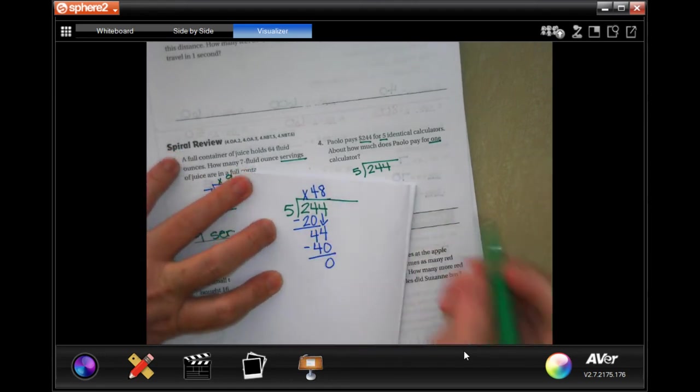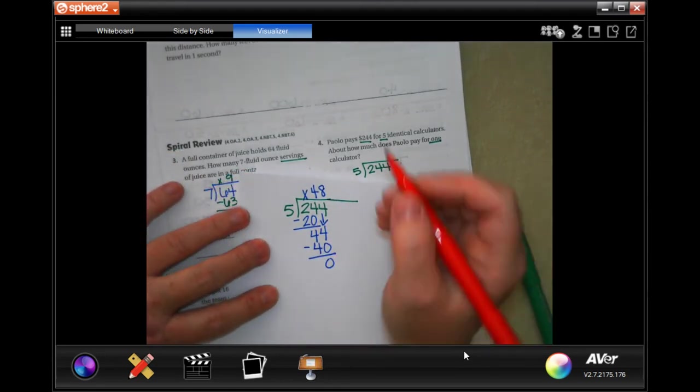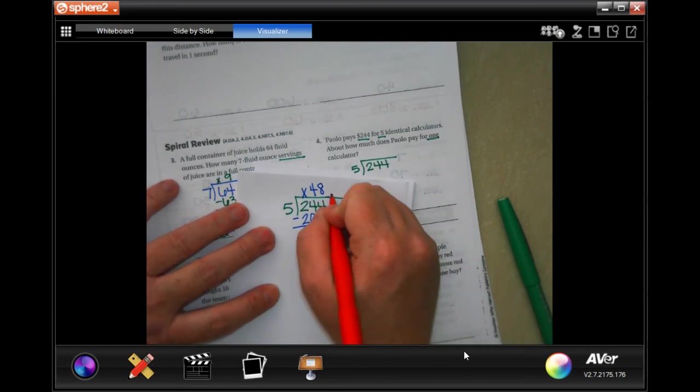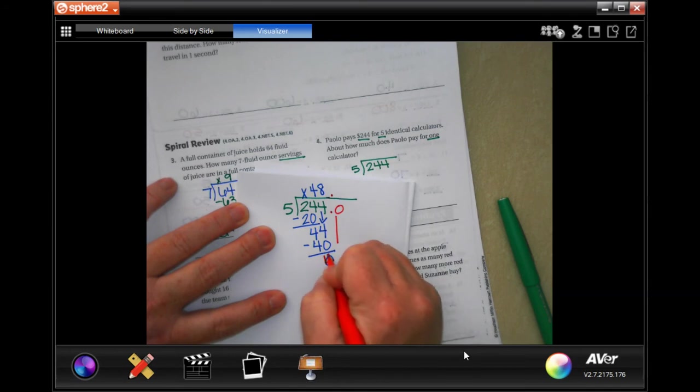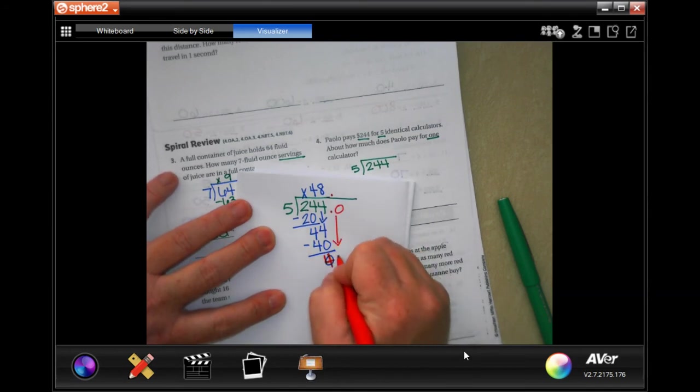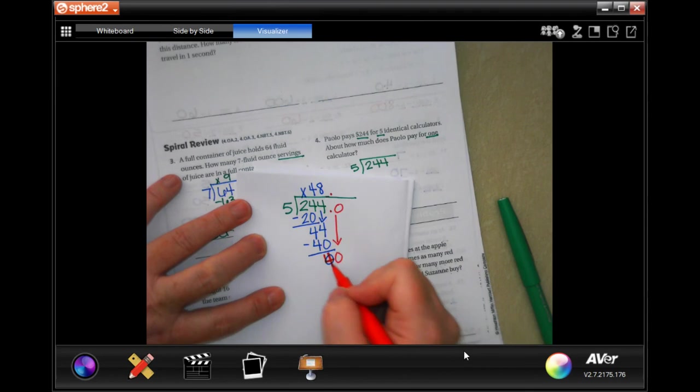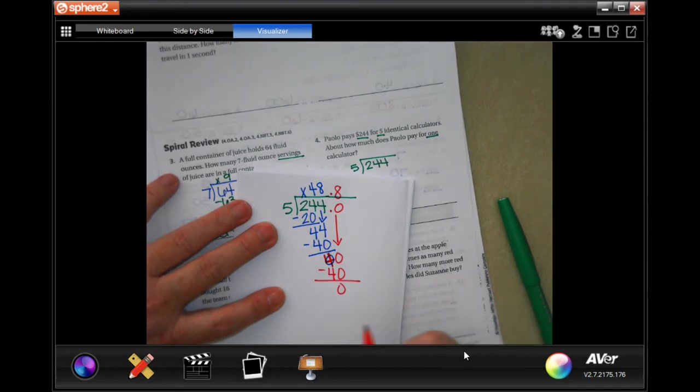Because I need to know how much each one costs, that means that I can put a decimal. Bring that decimal up, put a zero. Oh sorry, that should have been a four not a zero. I'm sorry guys. And then bring that down. Well five goes into forty, we just said eight times which is forty. Subtract and get zero. Now we actually get zero.